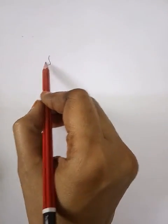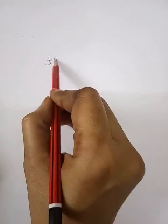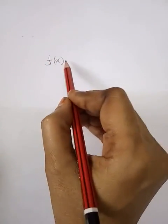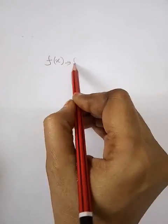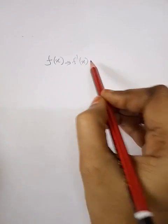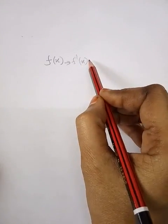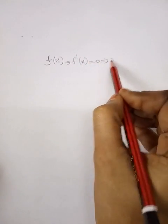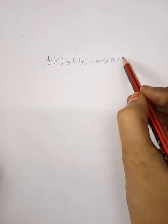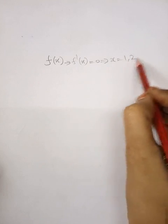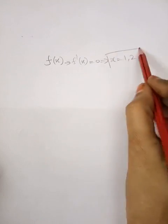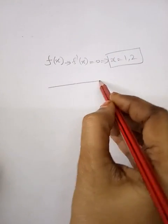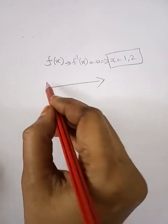The criteria is: first, given f(x), we should find out f'(x). Then equate f'(x) with 0 and calculate the x values. For example, you might get x = 1, x = 2, and so on. After that, you have to draw a real line.